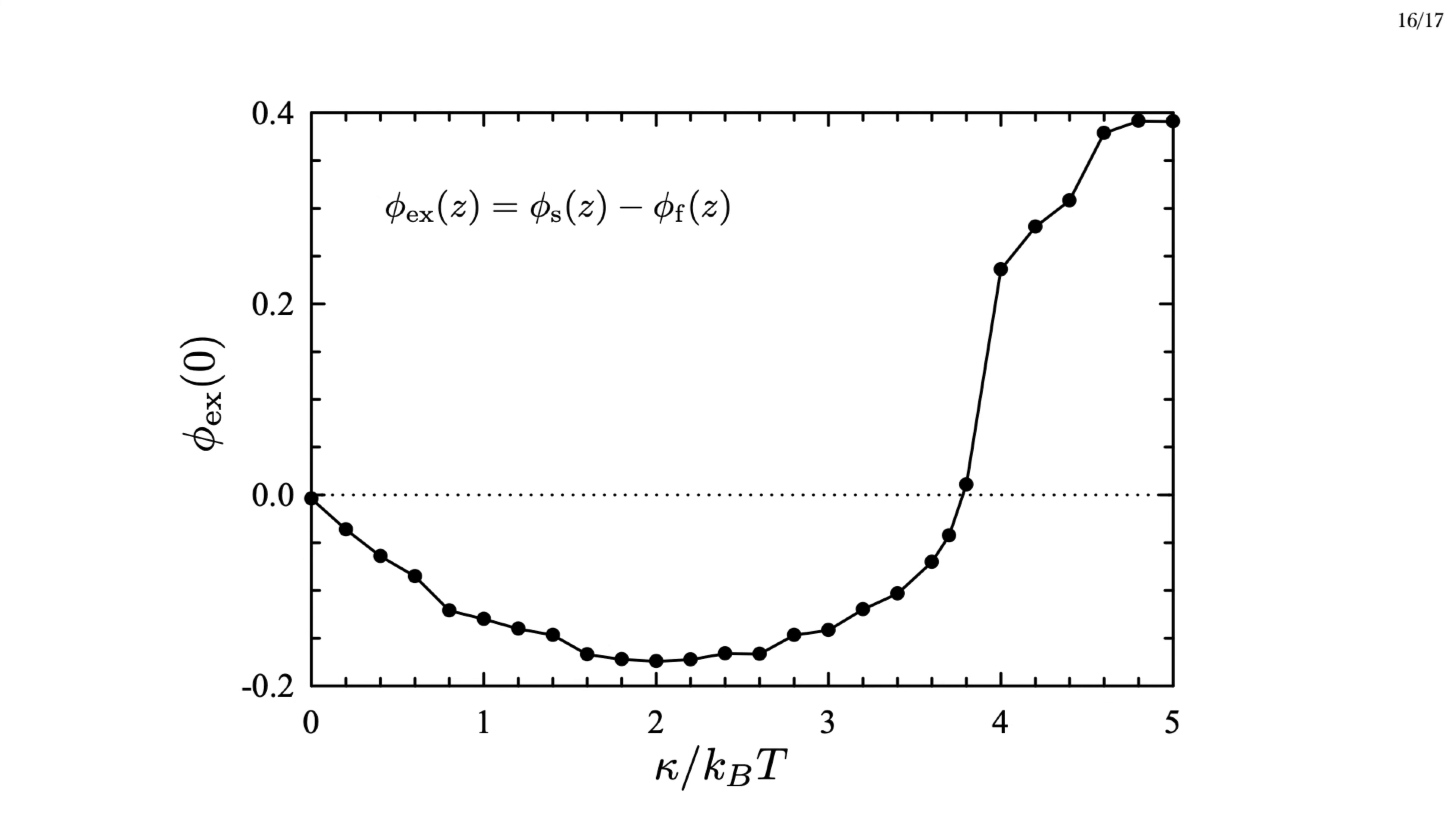To better understand this, we've plotted the excess at the wall as a function of the bending energy, kappa. At kappa equals zero, there's obviously no excess, the polymers are the same. Increasing kappa leads to a flexible excess, up to a point, where the preference flips and quickly changes to a strong preference for stiff polymers.